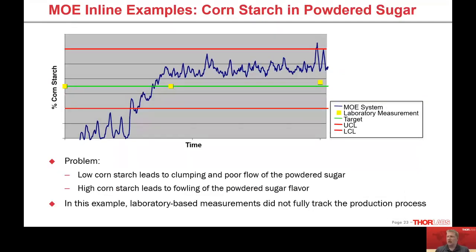We also looked at cornstarch in a powdered sugar production process. The routine lab measurement — specifically a turbidity measurement — was not able to detect rapid changes in the production process when relying on laboratory-based measurements at a defined interval. Low cornstarch leads to clumping and poor flow in the food product, while high cornstarch leads to dilution of the final flavor. Once again, the real-time performance adds quite a lot of value compared to what would be measured from a laboratory-based measurement.